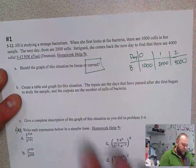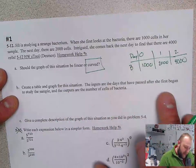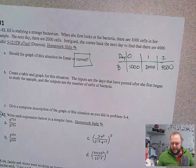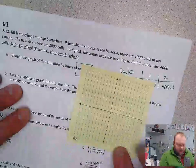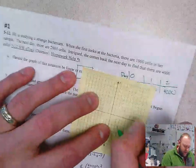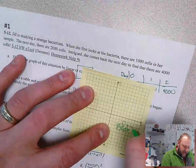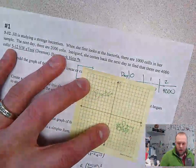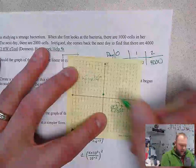Create a table and graph for this situation. The inputs are the days that have passed after she began to study the sample, and the outputs are the number of bacteria. So you can use Desmos for this and then just make a sketch. I'm going to use one of my graph sticky notes to make sense of this. My x is the day and y is bacteria. So on day zero, these are going to be 1,000. So at day zero, there was 1,000.